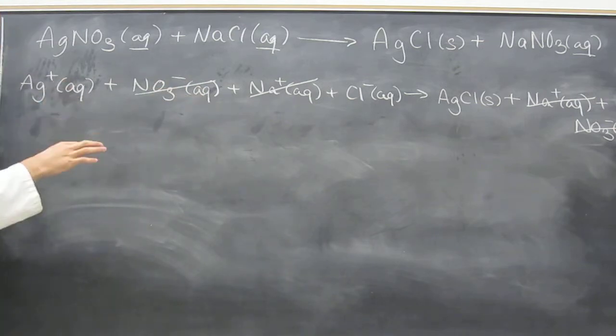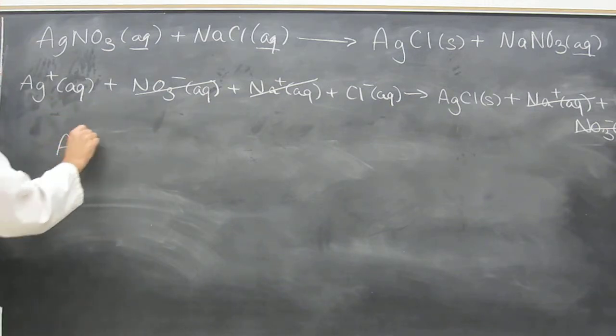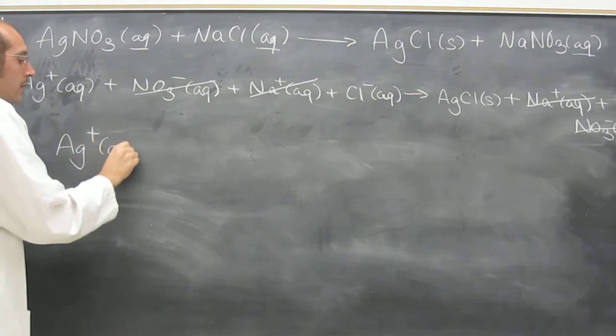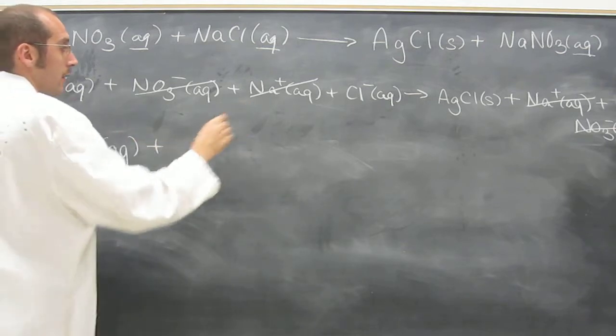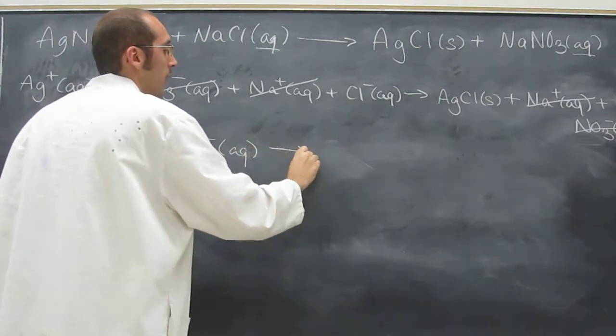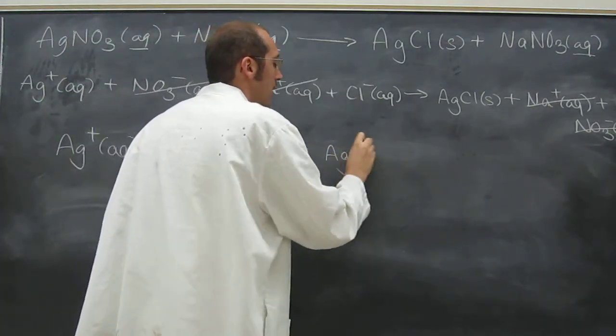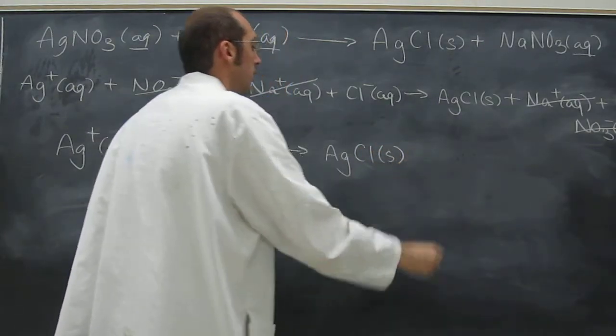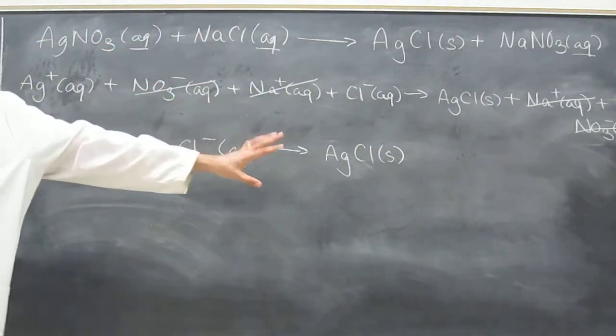So let's write the net ionic. Net is just everything but the stuff you cancel. Ag plus aqueous, plus Cl minus aqueous, goes to AgCl solid. That's the net ionic equation.